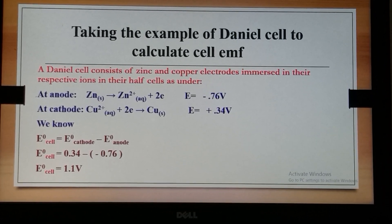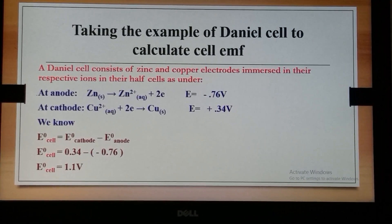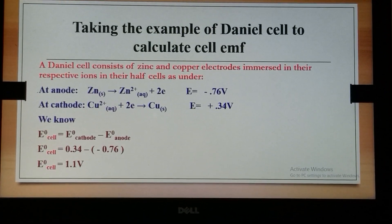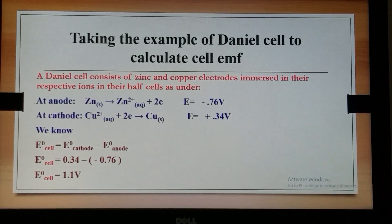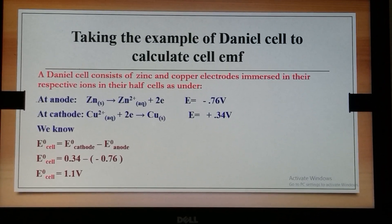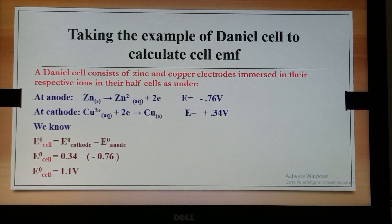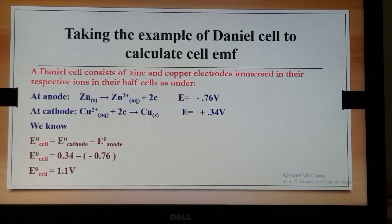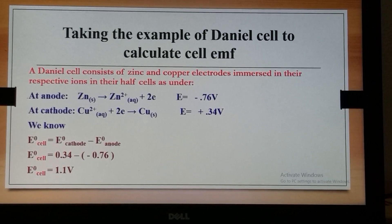Taking the Daniell cell example to demonstrate the calculation: at the anode, zinc gets oxidized with the liberation of two electrons, and E⁰ is −0.76 V. At the cathode, copper ions accept electrons from the external circuit and get reduced to copper, and E⁰ is +0.34 V.